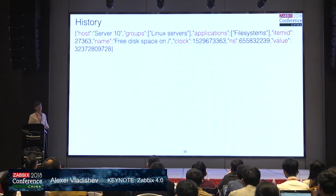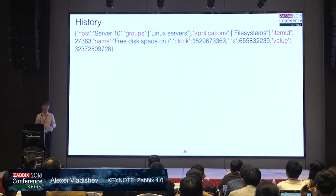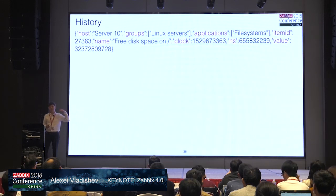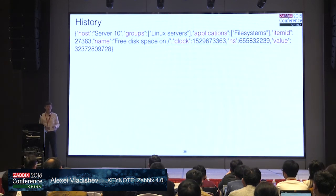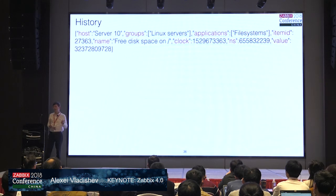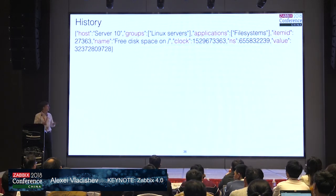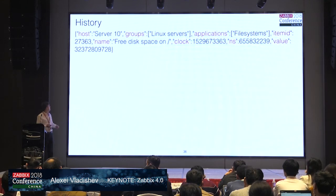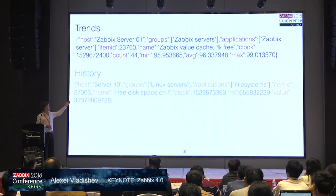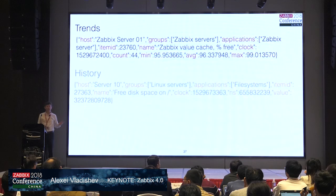The format of these files is quite simple: newline-separated JSON. For every collected metric we have a JSON record containing a timestamp, item ID, host name, applications, and host groups — a pretty wide set of data. For trends, it's very similar but instead of a single value, we have average, maximum, minimum, and number of values per hour.